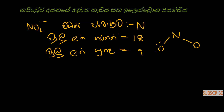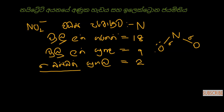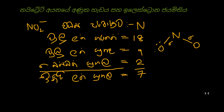So here we are going to talk about nitrogen and oxygen, that is sigma and oxygen. Now we are going to talk about nitrogen and oxygen, and here we are going to talk about nitrogen and electron.